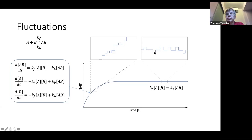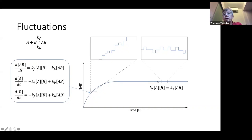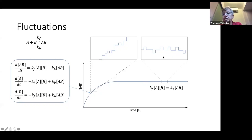At equilibrium you still have forward and backward reactions — the only thing that happens is you have as many forward reactions as backward reactions, so the total number of complex AB doesn't change. But you constantly have new complexes forming and falling apart. These fluctuations at equilibrium contain all the information about your chemical reaction. As long as you are sensitive enough to measure individual reactions, you can measure these fluctuations and get all the information without needing to look at kinetics. That's why fluctuations are so important.